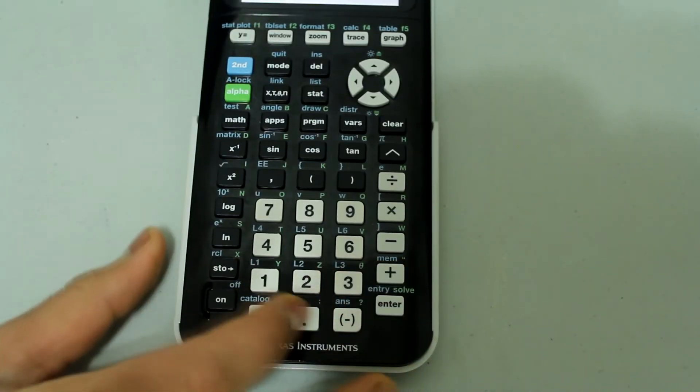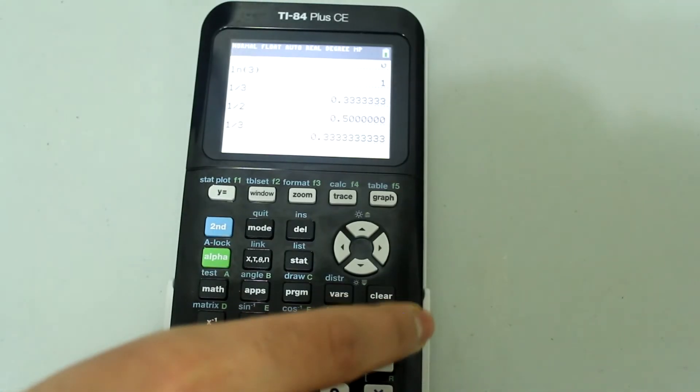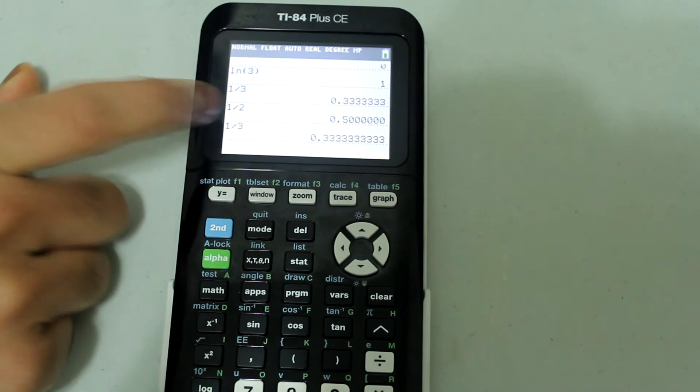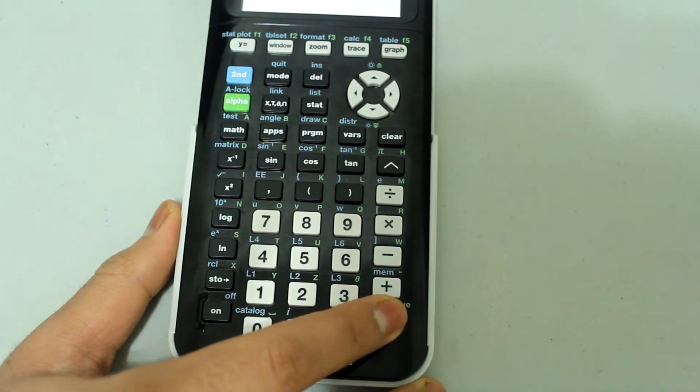And this time, try 1 divided by 3, press enter. We get a really long decimal answer. And now, let's do 1 divided by 2, press equals, and we get just 0.5.